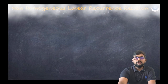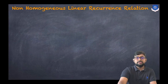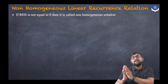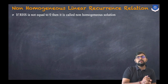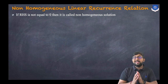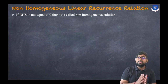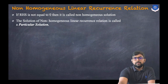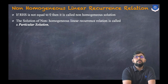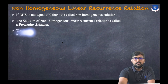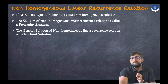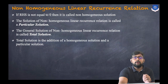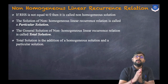First, what is a non-homogeneous linear recurrence relation? If the right-hand side equals zero, then we say it is a homogeneous linear recurrence relation. If RHS is not equal to zero, then it is called a non-homogeneous equation. Its solution is called a particular solution, and the general solution of the non-homogeneous linear recurrence relation is called a total solution. The total solution is the addition of the homogeneous solution and a particular solution.